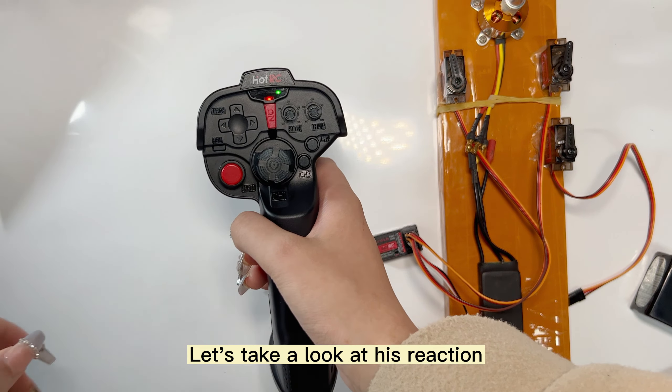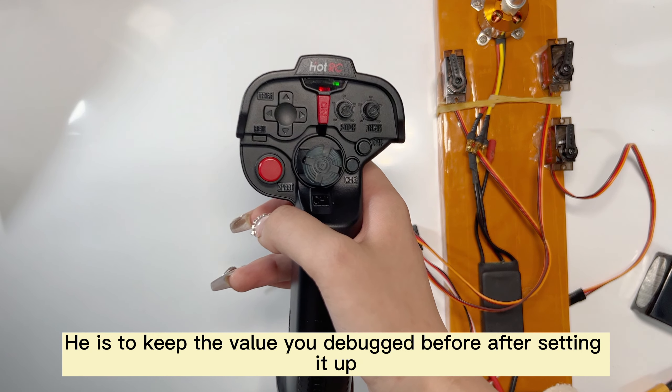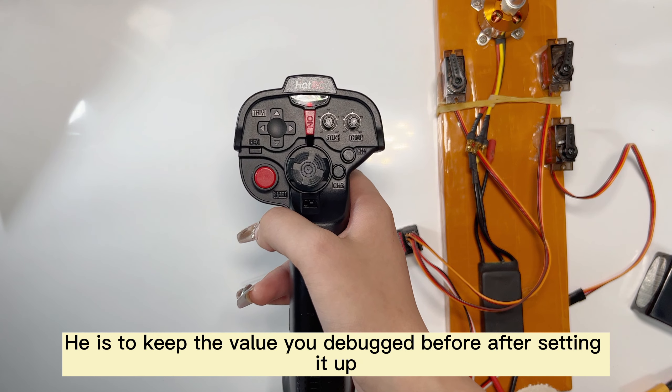Let's move CH2 again. You can see that the second channel still maintains 100% of the stroke. This is our lock function. It keeps the value you debugged before after setting it up.